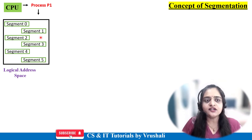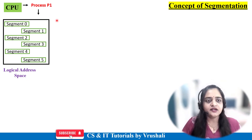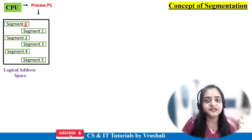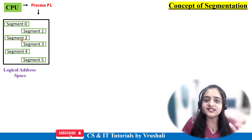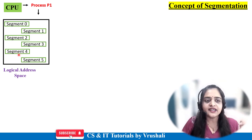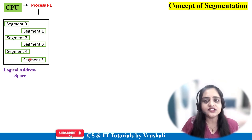Assume that process P1 is an operations program in Java programming language. Segment 0 indicates the logic of the arithmetic operation or arithmetic function, then subtraction function, then there is a stack segment, then a code segment, and again the main function. Basically, this process is divided into modules which are called segments. So there are total 5 segments in process P1.